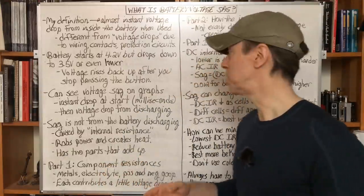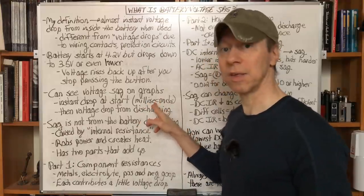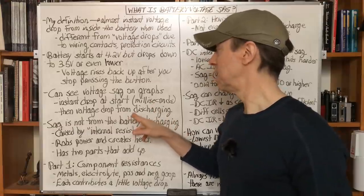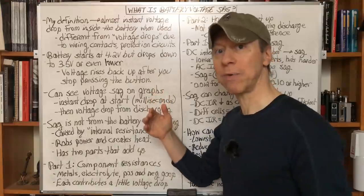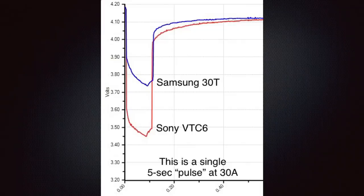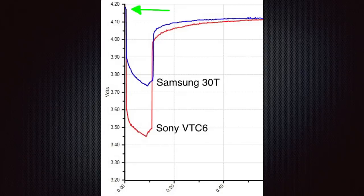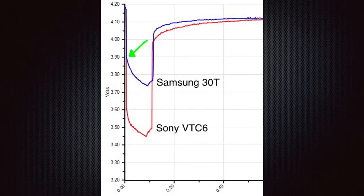We can see what's going on with voltage sag if we look at a graph. It's the instantaneous drop — it only takes a few milliseconds to happen inside the battery right at the beginning of the discharge. The voltage drop after that is what happens from discharging the battery down. Looking at the graph on screen, one shows a Samsung 30T being used and the other shows a Sony VTC6. Up in the upper left corner, with the green arrow pointing, you can see they started around 4.17 volts or so. When the button is pressed and we start pulling current from the battery, almost instantly you can see the blue line for the Samsung 30T drop down to about 3.9 volts. That's battery sag — that's the instantaneous voltage drop that's just inside the battery, not from the battery being discharged.